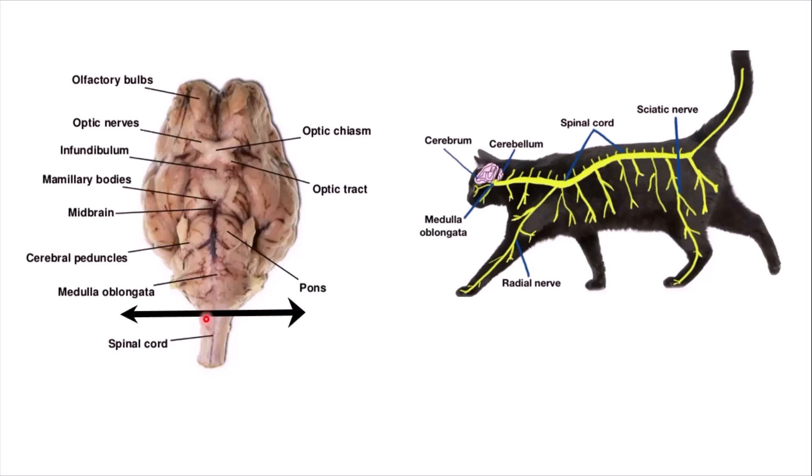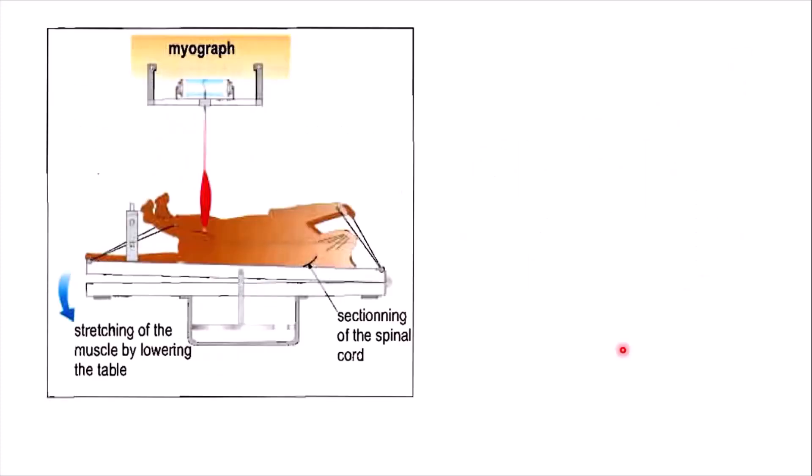This way, he isolated the spinal cord from the brain. This is now referred to as a spinal animal, where all the responses happening in the lower body of the cat are independent of the brain. After that, Sherrington placed the cat on a table and fixed it well. Then he detached the lower tendon of the quadriceps muscle and fixed that onto a myograph, which is a device which measures the muscular tension and contraction in the muscle.